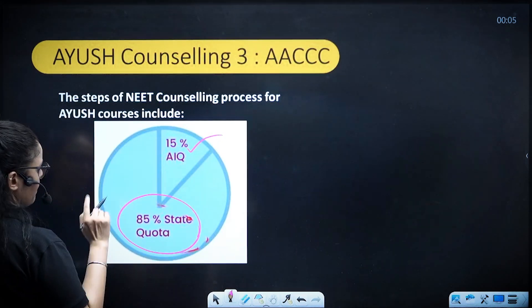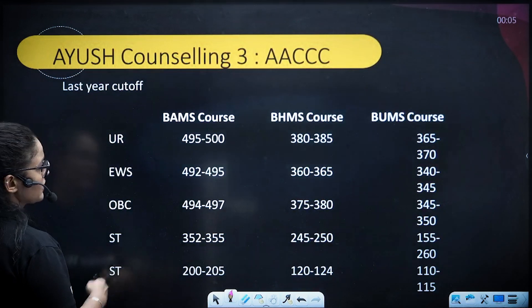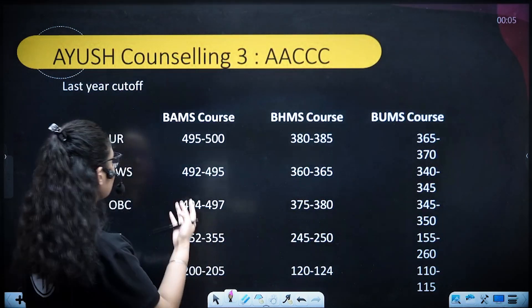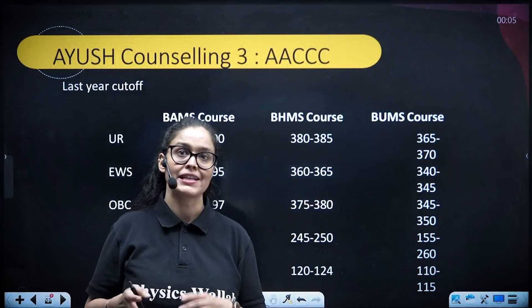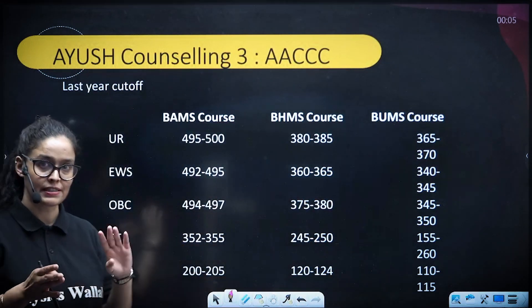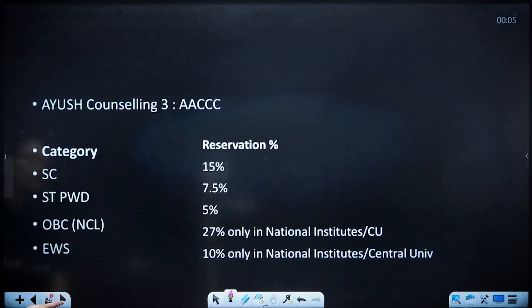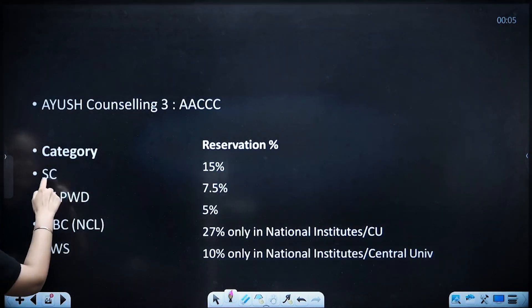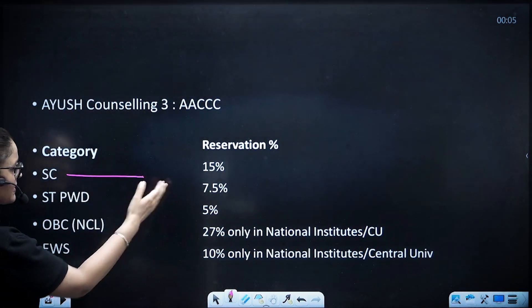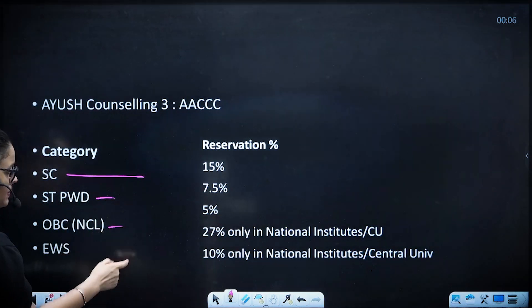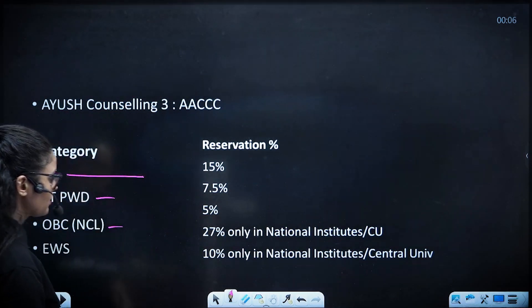We know that 85% of seats are reserved for the state quota in AYUSH, similar to the 50% All India Quota rank. As per past trends, BAMS courses are generally available at these marks — students can take a screenshot for reference. Under AACCC AYUSH counseling, reservations are: SC 15%, PwD 7.5%, OBC-NCL 27%, and EWS 10%.